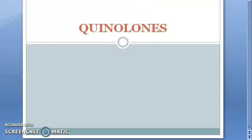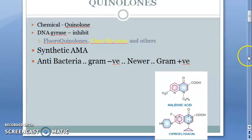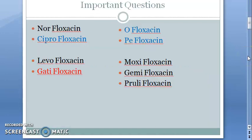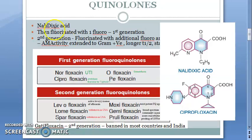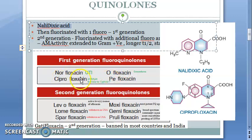In the last video we started off with quinolones. We saw the classification — we saw nalidixic acid initially, then they fluorinated it with one fluoro, and then they got norfloxacin, which is the first generation.